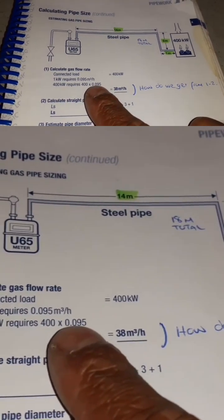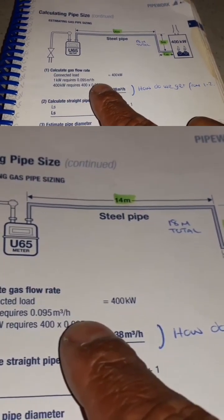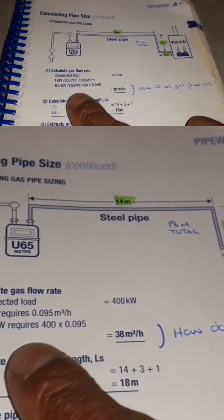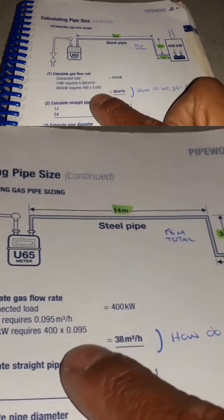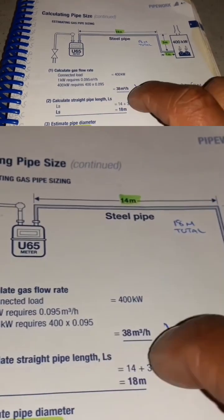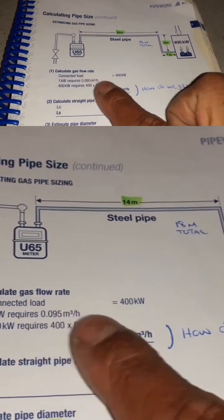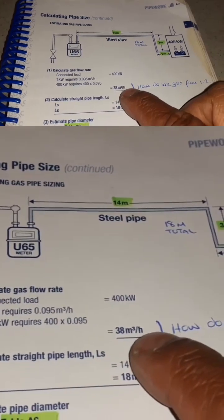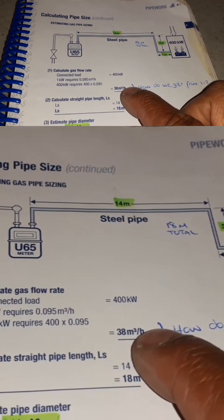So we've got 400 kilowatts that we have here, and we times it by the 0.095 that is required per kilowatt, and we end up with 38 meters cubed of gas an hour.